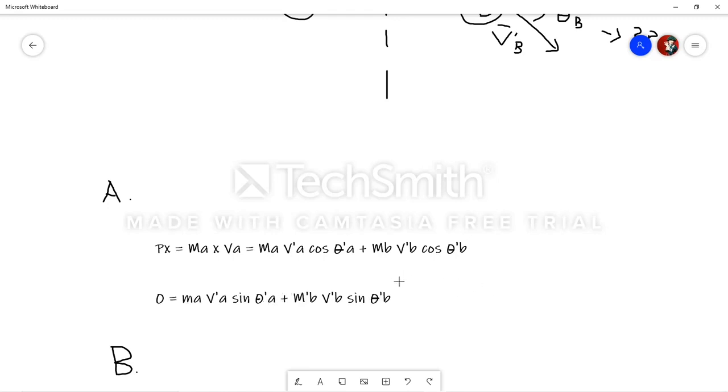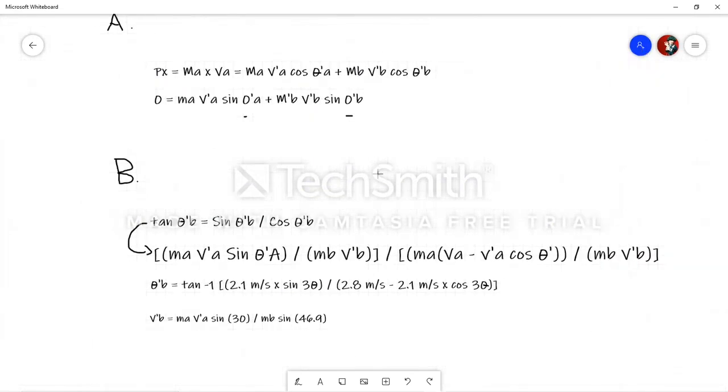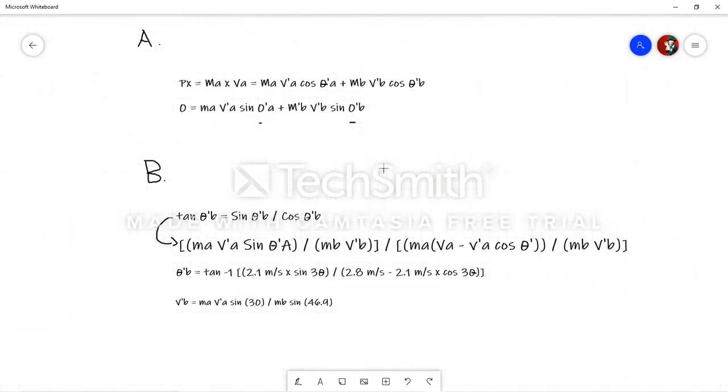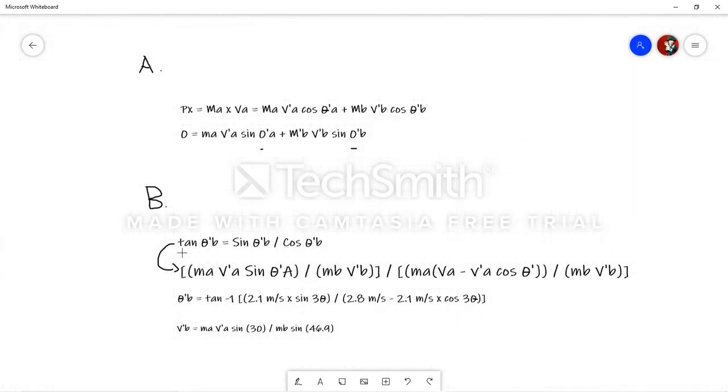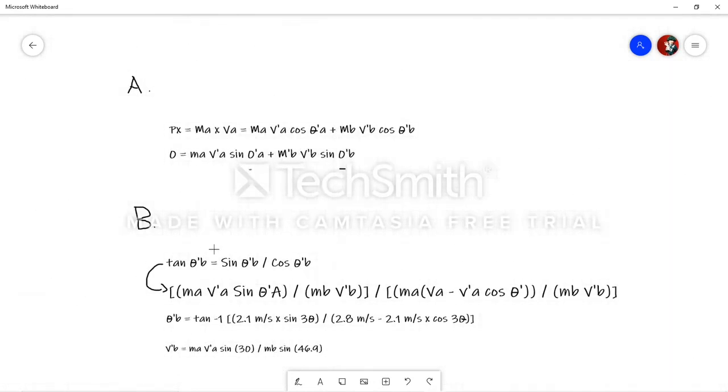Now, using these two formulas, we can actually solve question B. Now, let's move on to question B. Okay, so to actually start solving all of these questions and find each part, we have to first begin by finding the angle of B. Now, how can we do this, you may ask? Well, we can do this by using tan theta equals to sine theta B over cos theta B, because we're trying to find angle B. Now, we know that angle A is 30 degrees. So, using all these formulas, we can derive this.